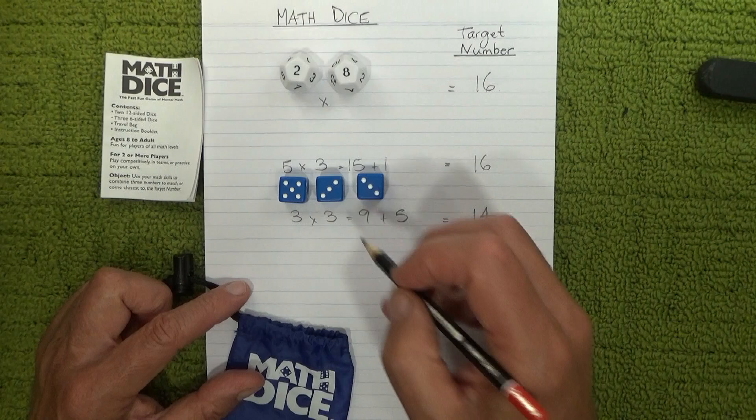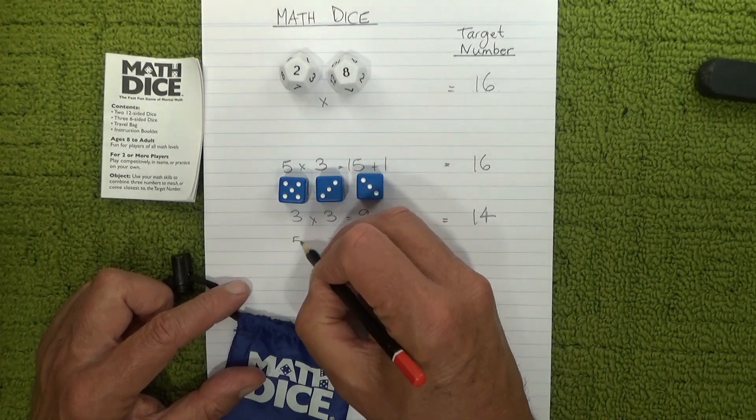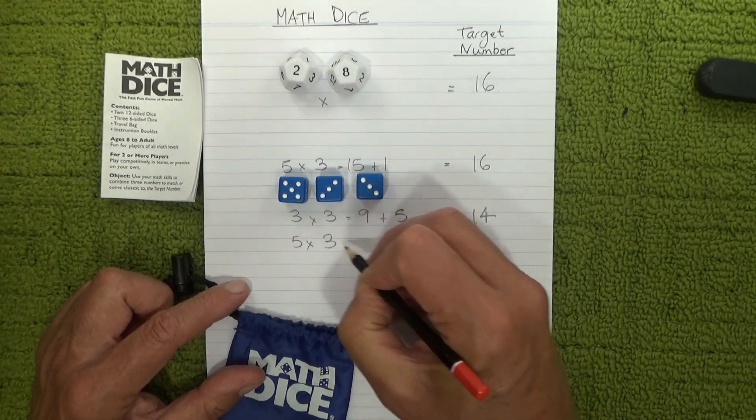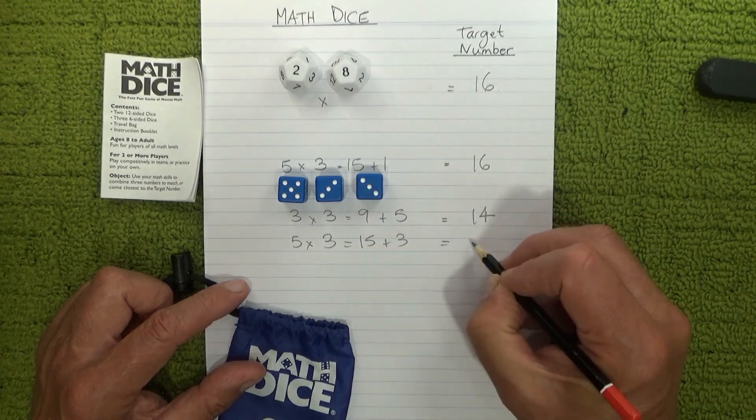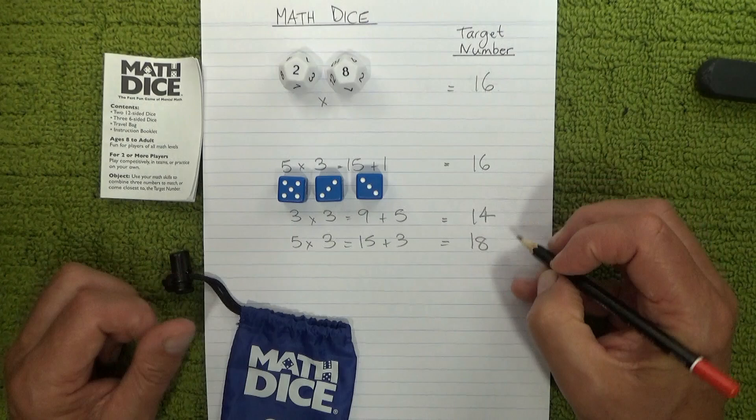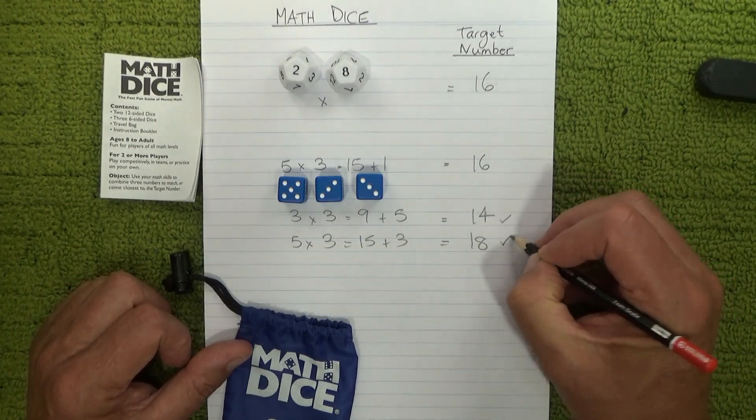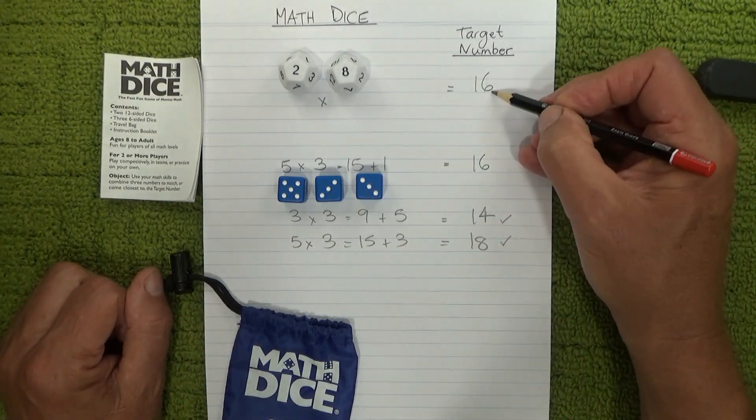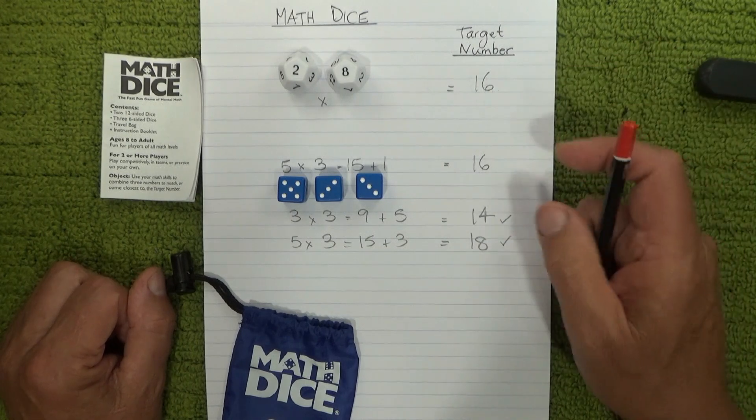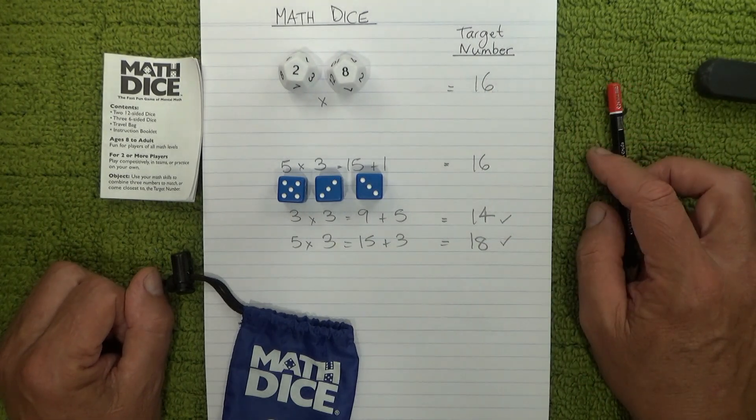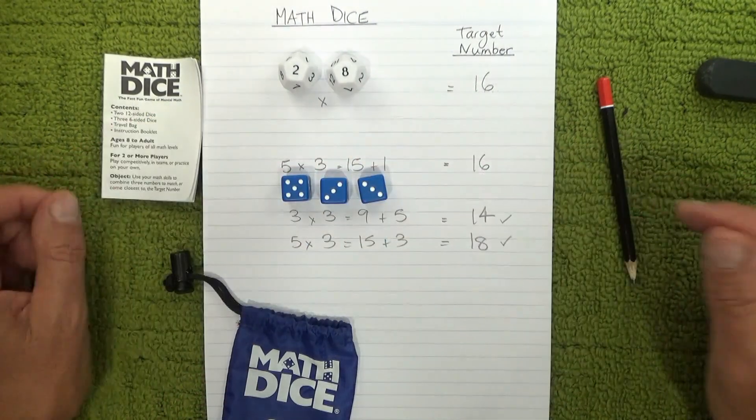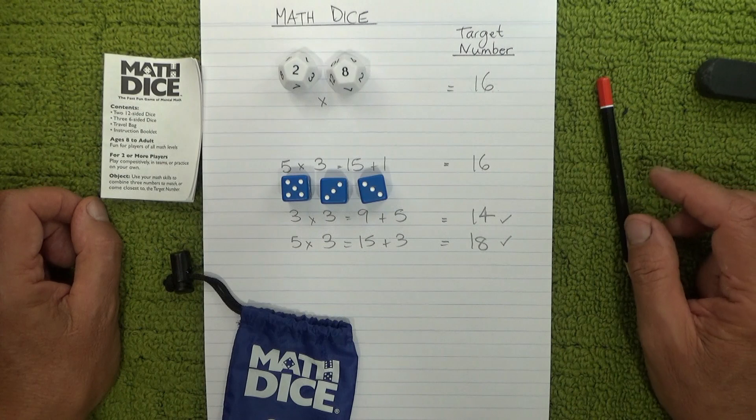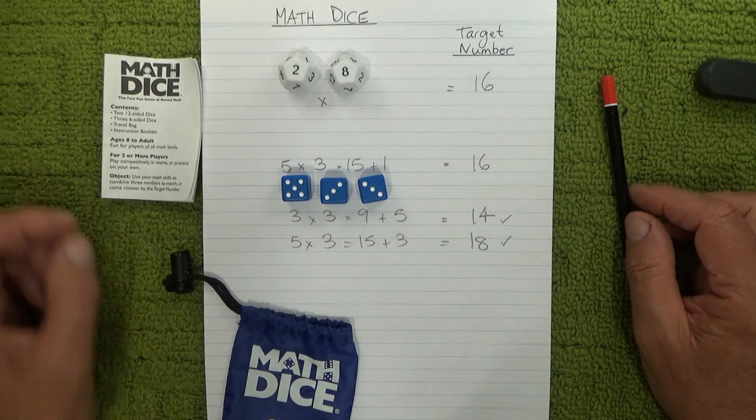Let's have a look: five times three is fifteen plus three is equal to eighteen. So they're probably equally correct then, because fourteen is two away from sixteen and eighteen is two away from sixteen as well. So I don't think there's any other ones that would give you that answer.